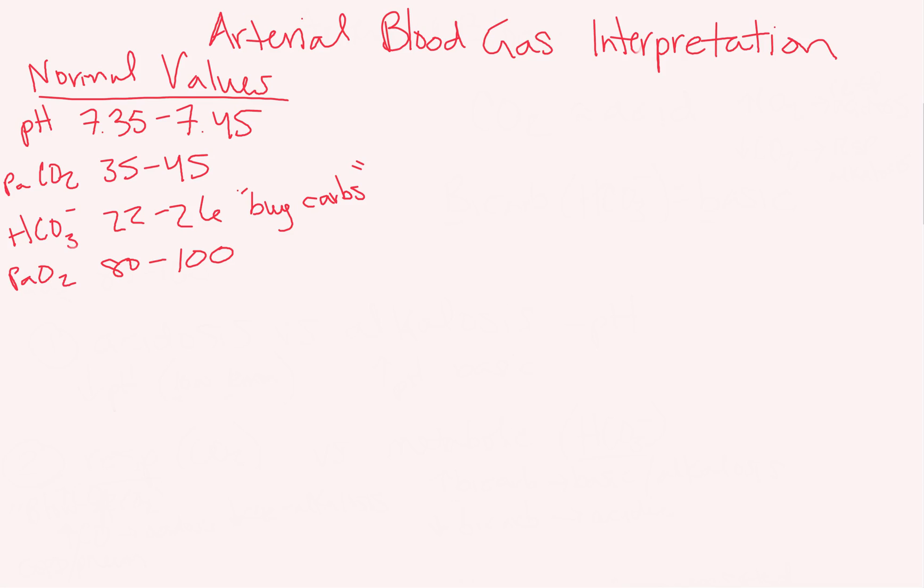A normal pH in your arterial blood is 7.35 to 7.45, so 35 to 45 was the takeaway there. My partial pressure of CO2 in my blood is also 35 to 45. My bicarbonate is 22 to 26 — that's the age at which you can buy a lot of carbs because you've graduated college and have a fast metabolism, so bicarb. And your PaO2 is 80 to 100.